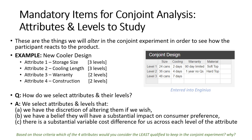Where did these attributes come from and how were the levels set? We only study attributes that we actually have discretion in altering in our product design. We should only study attributes for which we already have a theory, hypothesis, or belief that they will have a substantial impact on consumer preference. Another motivation for including an attribute is that altering levels may have drastic cost implications — for example, delivering a 48-can cooler for $50 will cost considerably more than a 24-can option. Finally, it's important that the levels we study are all reasonable and fit within the boundaries of consumer expectations. That's why we're not studying a cooler with a storage size of 6,000 cans.